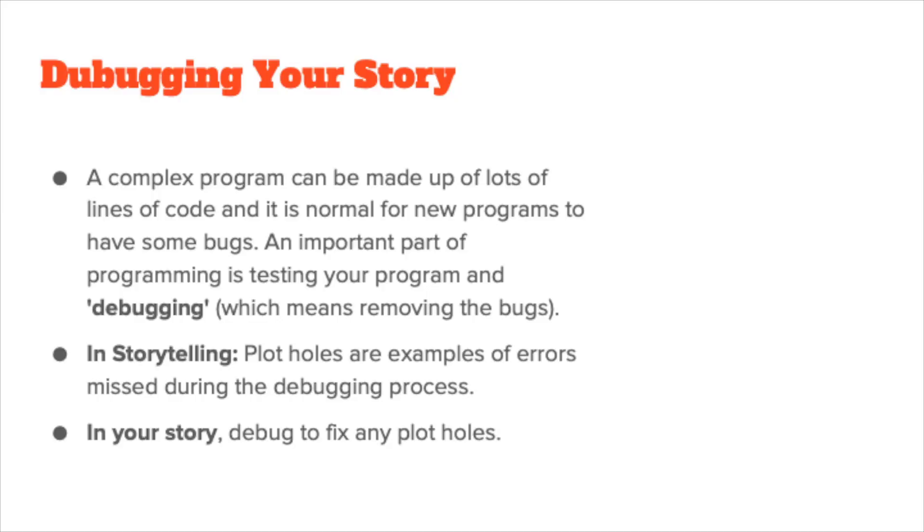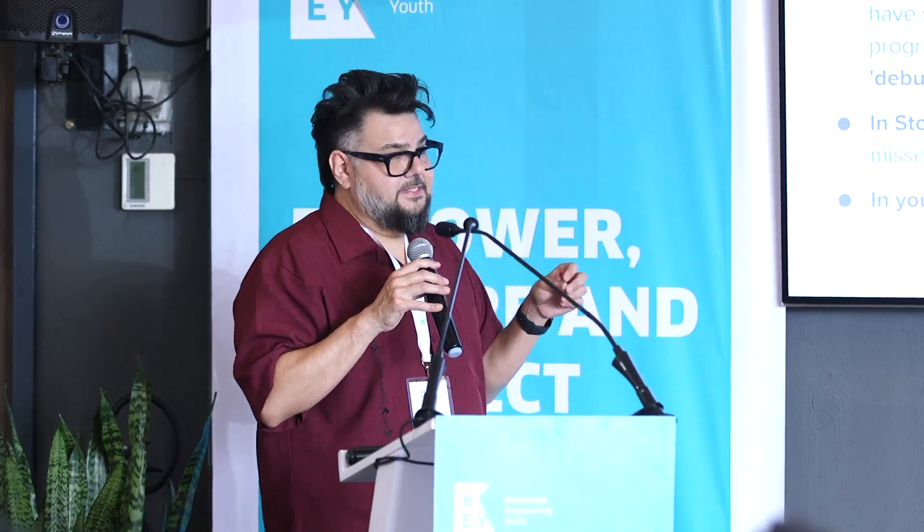Another big concept in computational thinking is debugging — testing your code because something's buggy or not working. That term comes from computer bugs. When you write a new program it doesn't always work, so you test it multiple times with multiple people until it works. In storytelling, debugging addresses plot holes. Working with an editor is like debugging your script — they're looking for mistakes, misspellings, incomplete sentences, unclear ideas. We'll debug our stories to make sure there are no plot holes.